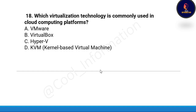Next question: Which virtualization technology is commonly used in cloud computing platforms? Options are: VMware, VirtualBox, Hyper-V, or KVM (Kernel-based Virtual Machine). The correct option is Option D, KVM — Kernel-based Virtual Machine.